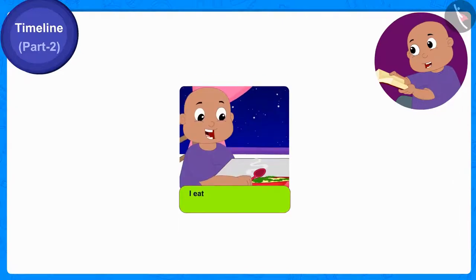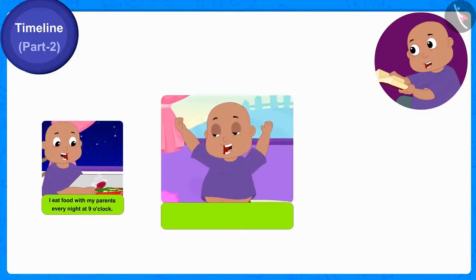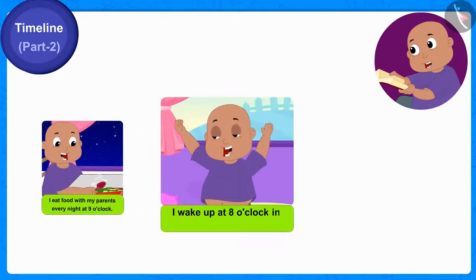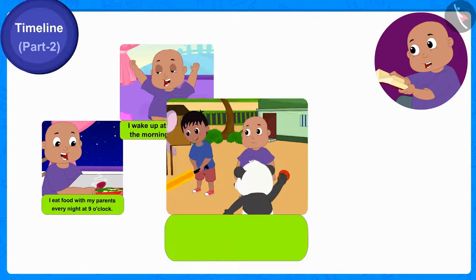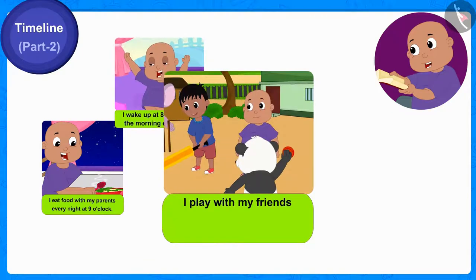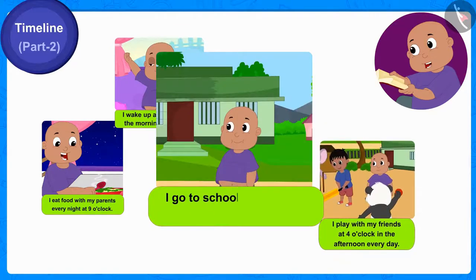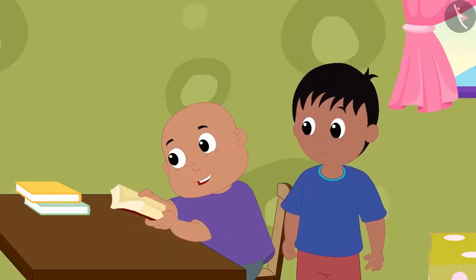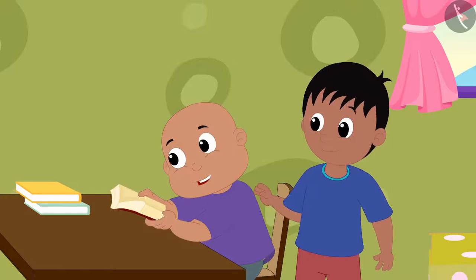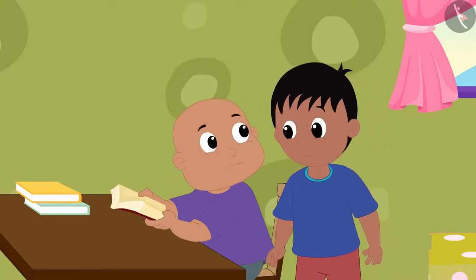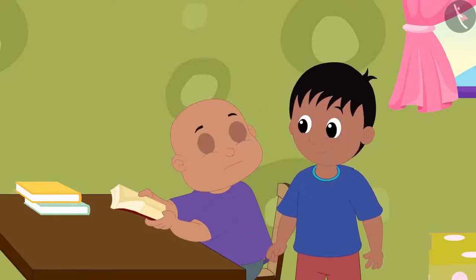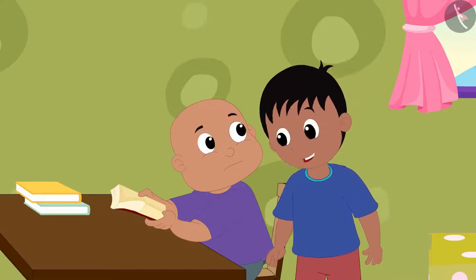I eat food with my parents every night at 9 o'clock. I wake up at 8 o'clock in the morning every day. I play with my friends at 4 o'clock in the afternoon every day. I go to school at 9 o'clock in the morning every day. Bablu was going to read further, but Raju stopped him. Oh no Bablu, in what incorrect sequence have you written your daily routine?